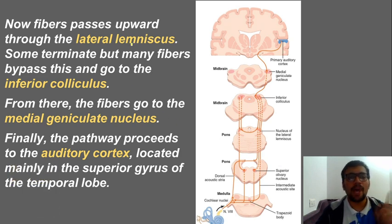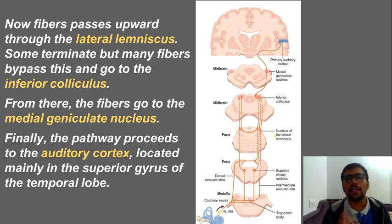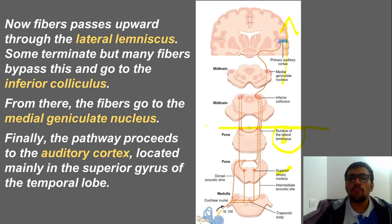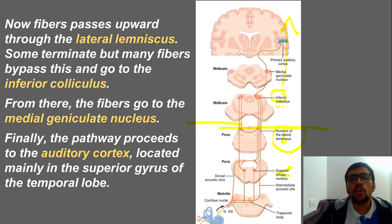From the superior olivary nucleus, fibers pass upward through the lateral lemniscus — which serves as the connecting pathway going further up. Some fibers terminate within the lateral lemniscus itself, but the majority continue to the inferior colliculus. So the sequence so far is: superior olivary nucleus → lateral lemniscus → inferior colliculus.